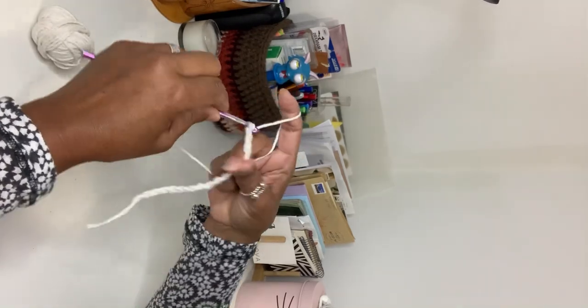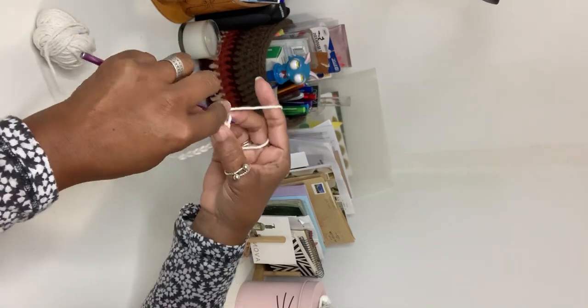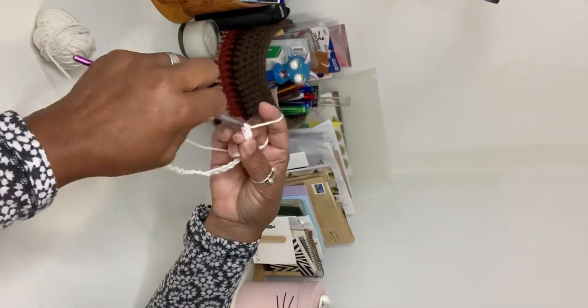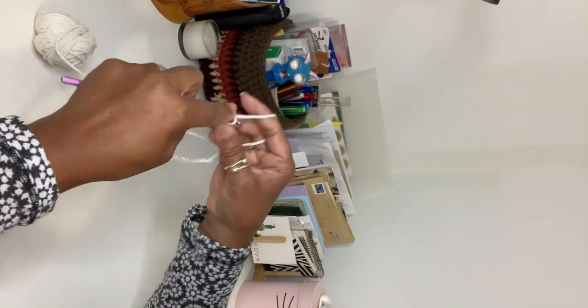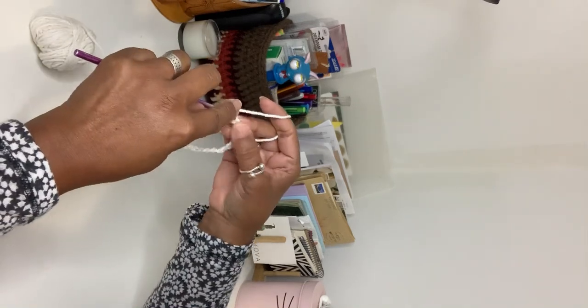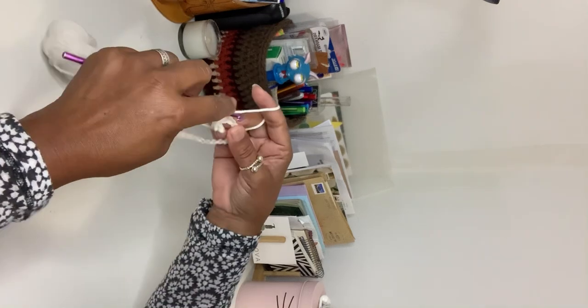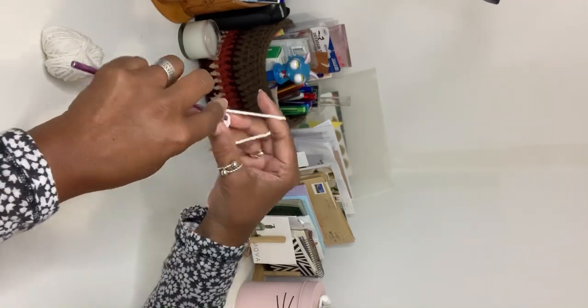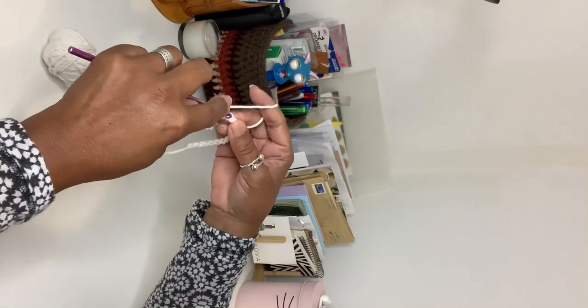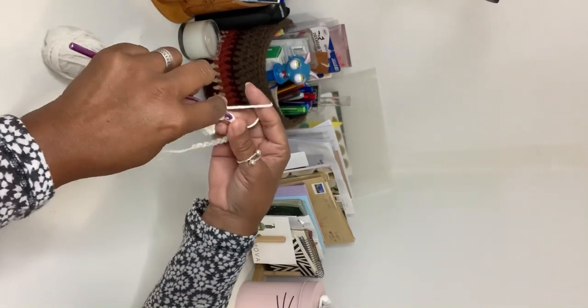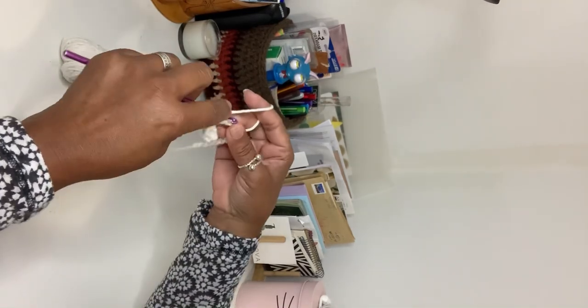It's important you do a foundation stitch. So in the second chain from the hook, you just do single crochets all the way across, and that means you'll be left with 17 stitches. When you turn around, you will start your V stitch.